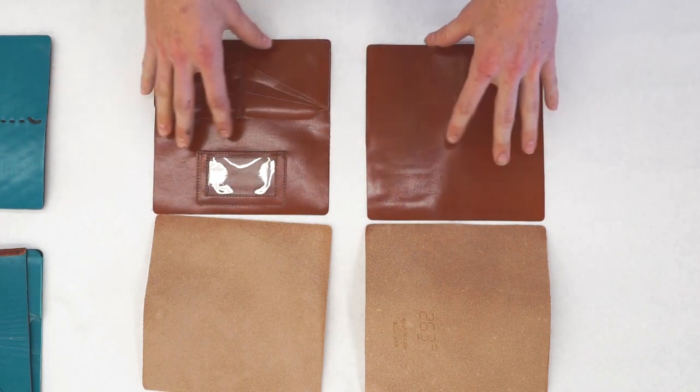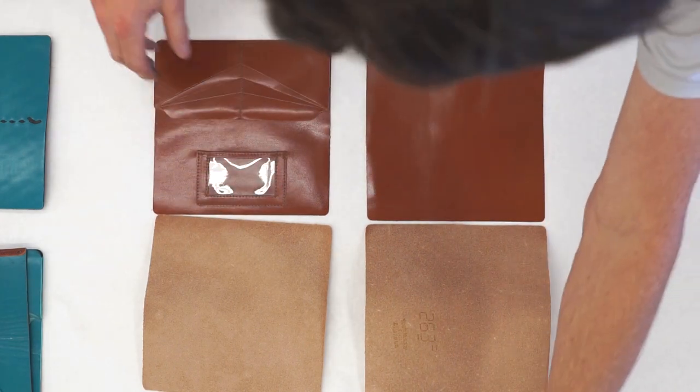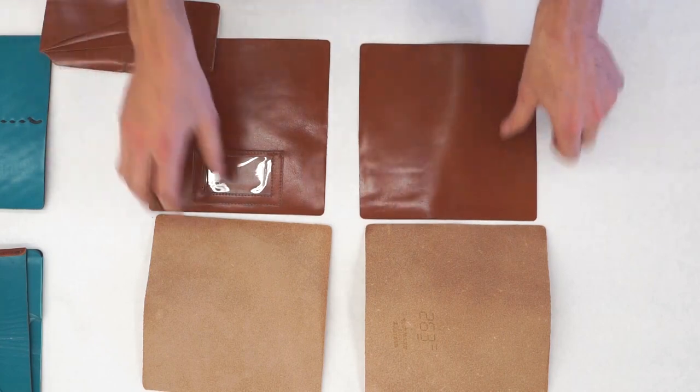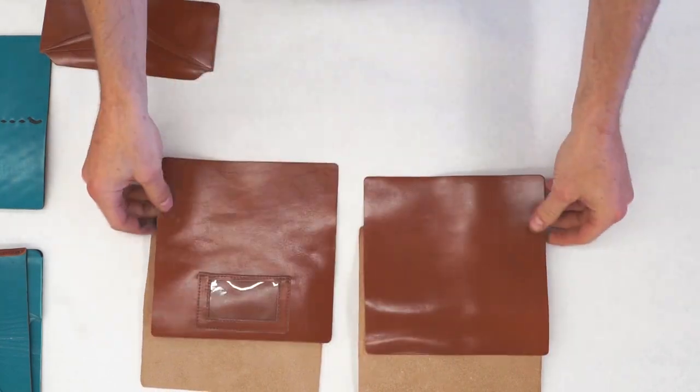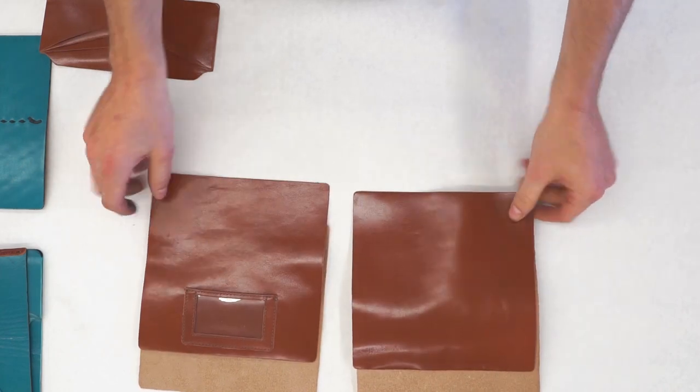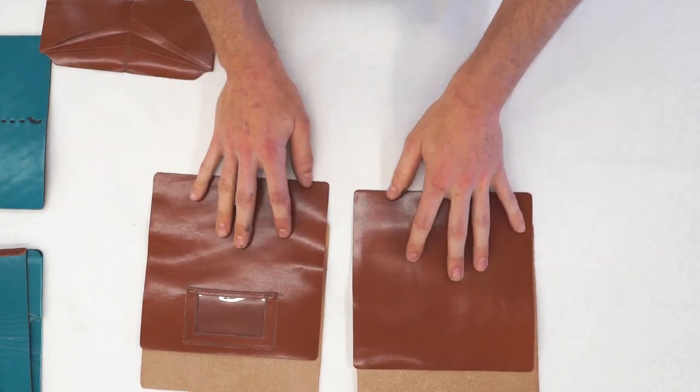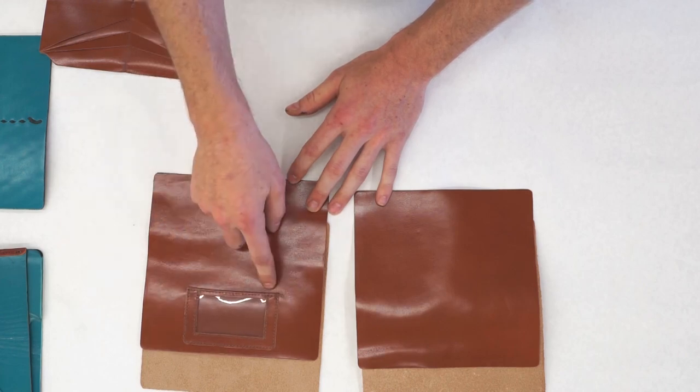So you start out with these components in the clutch kit. You've got your two vegetable tan clutch backs, and then for the ladies deluxe clutch kit you'll have two kid skin liners with an ID window sewn onto one of them.